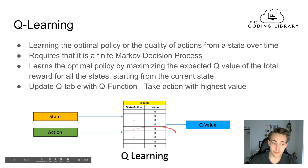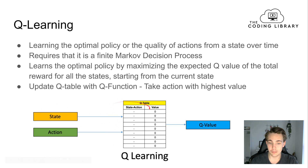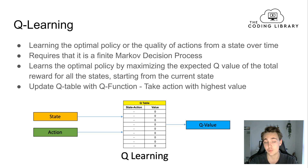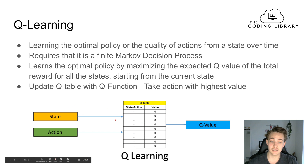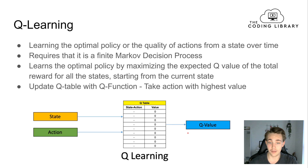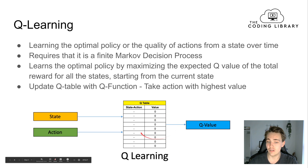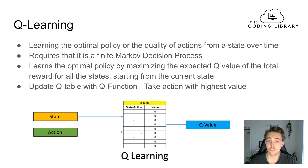The Q-table has a state-action pair and a value for that pair. The value is the Q-value that we're learning during training, and we update our Q-table with it. We give a state and action to the Q-table and get back the Q-value. When we've trained our agent, we take the action with the highest Q-value for the given state we're in, and that action corresponds to what we do in the environment.